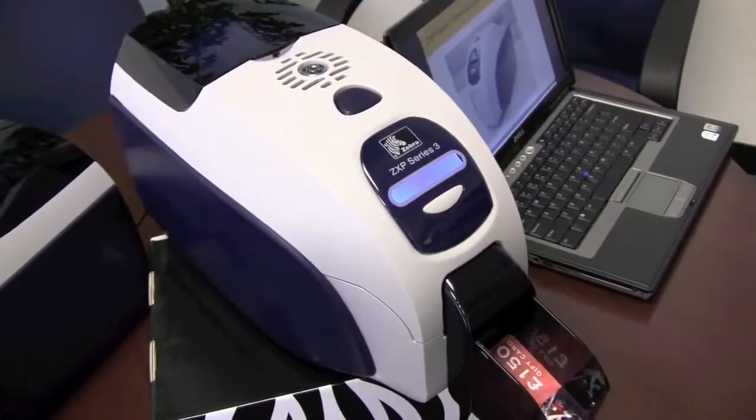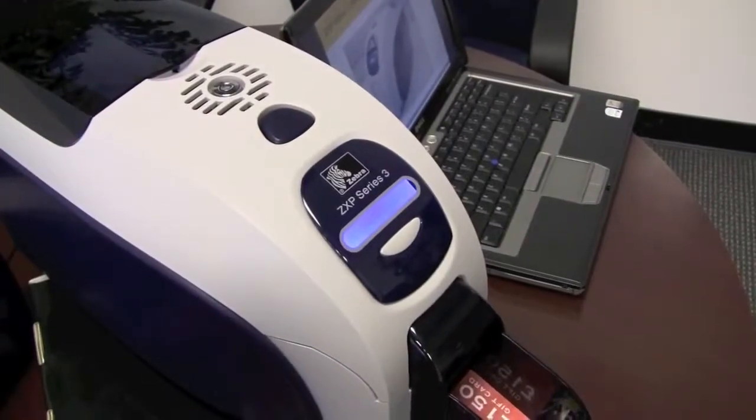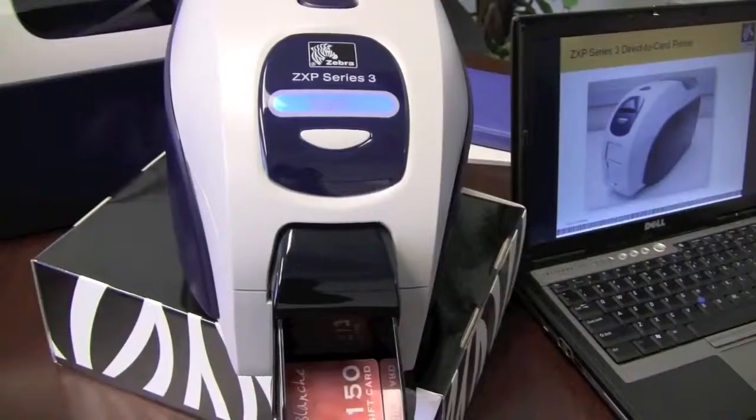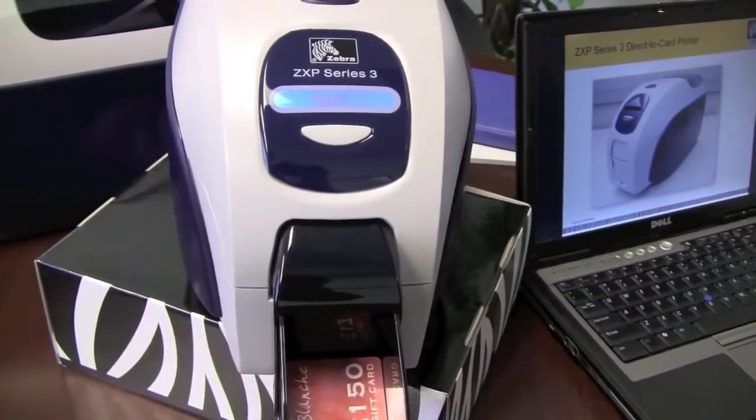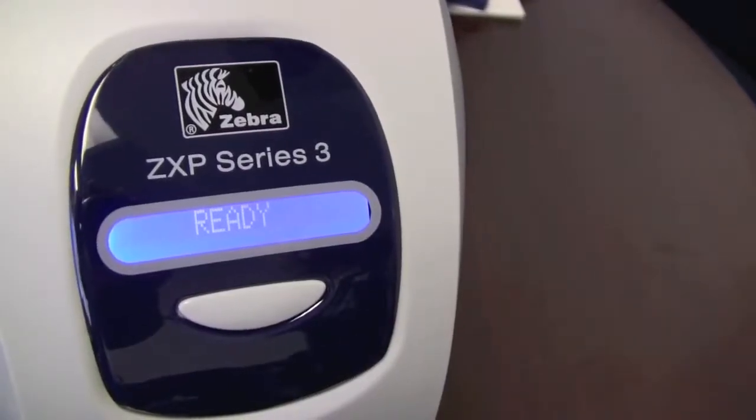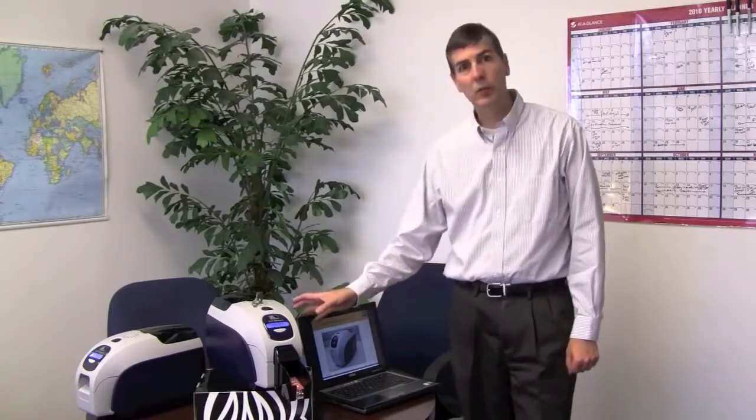One of the things we've done to enable that speed is to move some of the image processing into the host computer. There's a lot of image processing, analysis and image perfection that needs to happen. For us to get greater control over that, we've moved some of it into the host PC so that the printer can just focus on printing. The print speed is enabled both by improvements in the printer—mechanical, electrical, and firmware changes—and better host image processing on the PC.